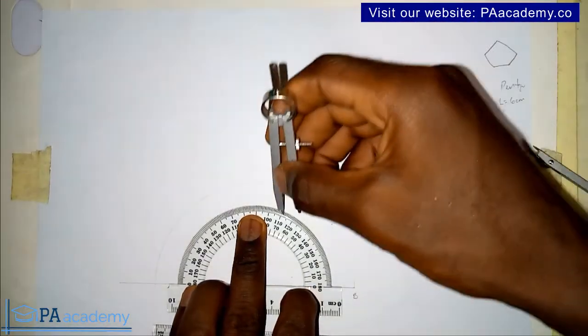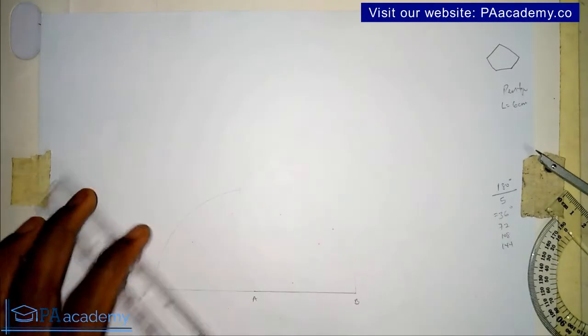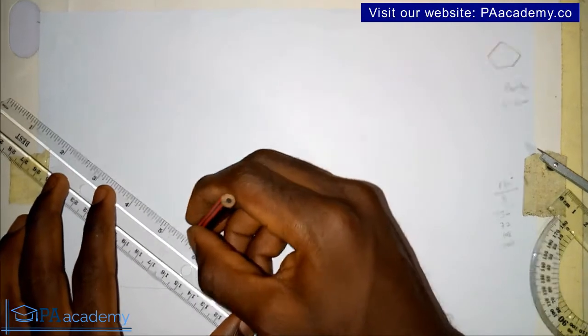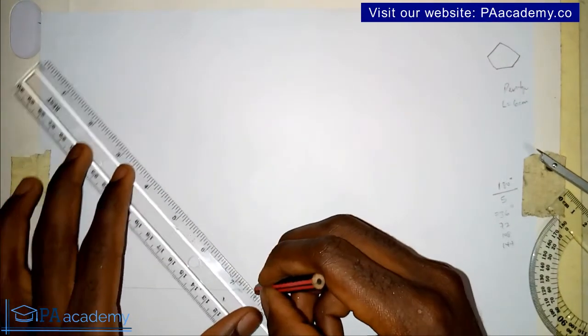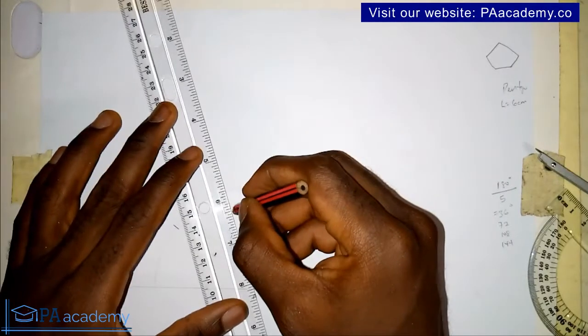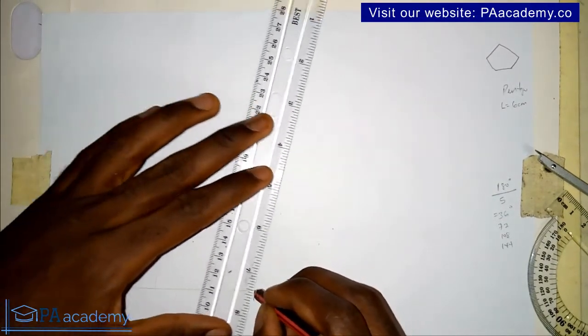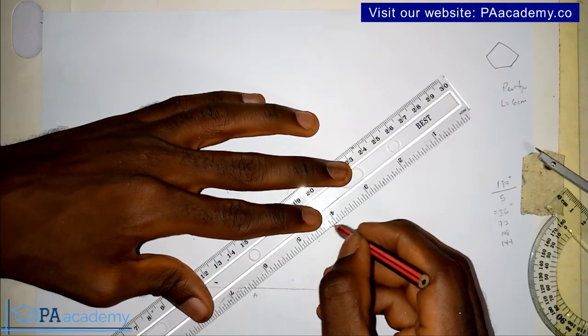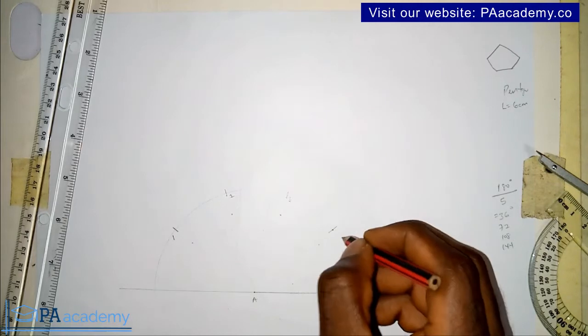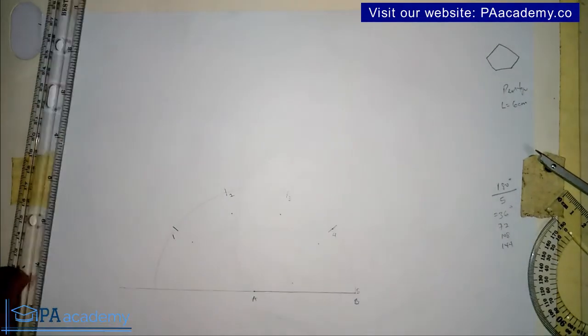So that's the 72, then 108. Now let me mark the points on the semicircle, the reference of the semicircle. We have the first, this is it. I'll just divide it into five. Let me call this one, two, three, four, and five.